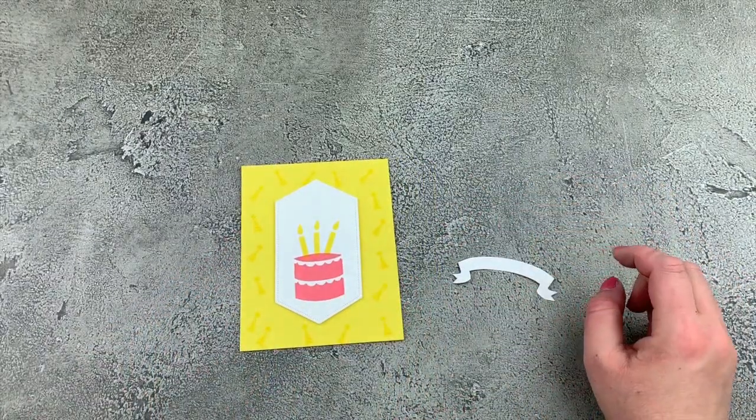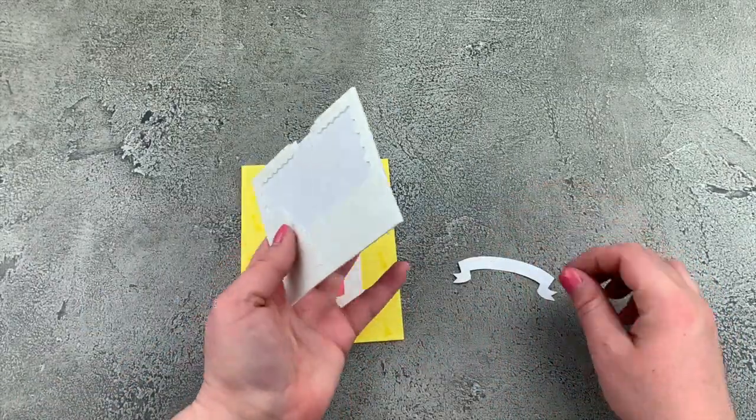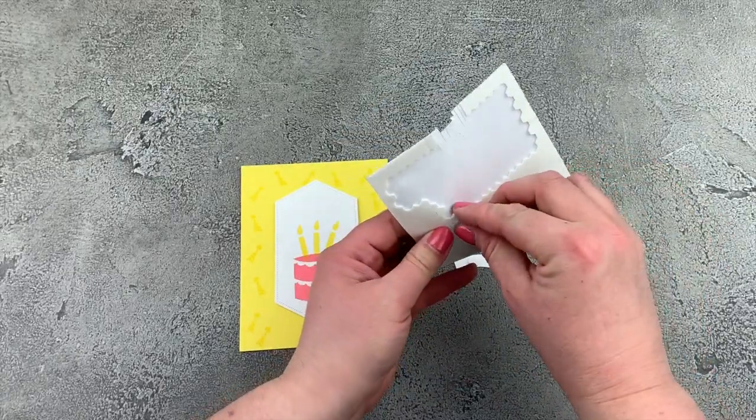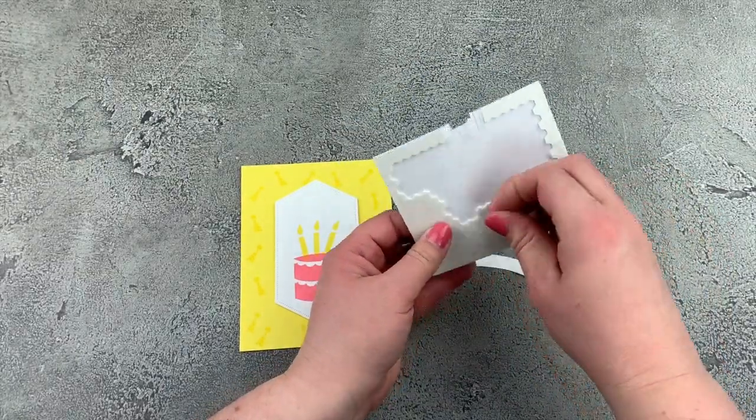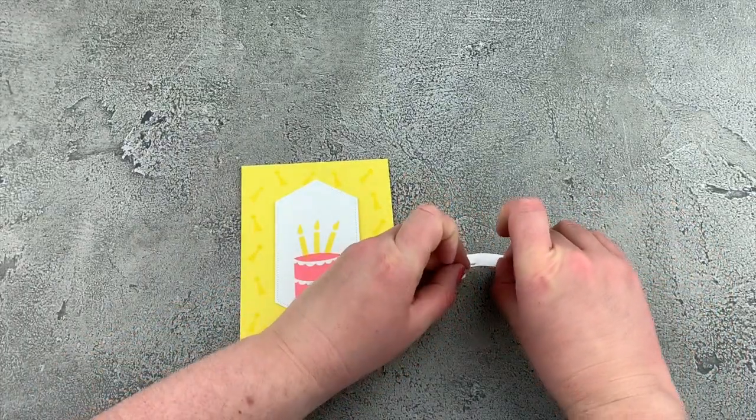And we'll take our mini dimensionals and add them on the back. And this time, I don't want to add them all the way to the edge. I'm just going to add them through the middle because of where this is going to be placed on my card. I'm putting it on the top of the label.